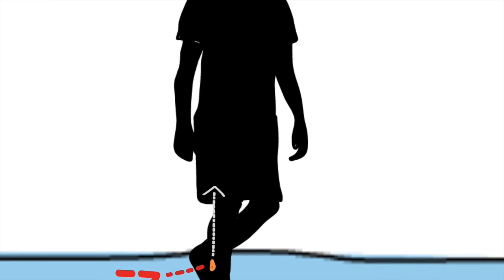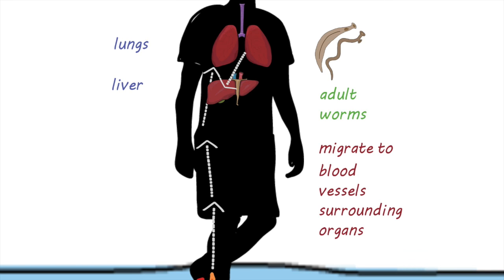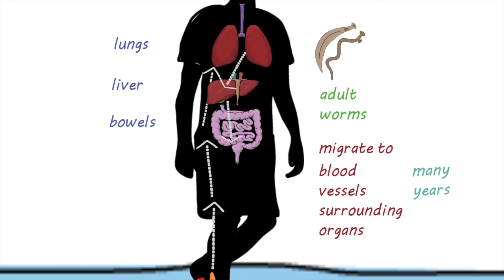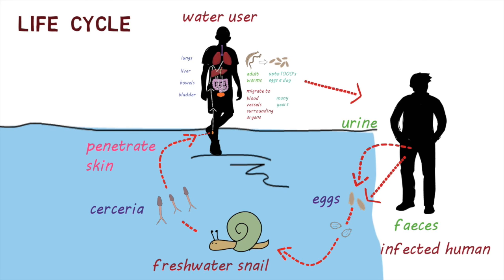Once in the body, the cercariae find their way through the lungs and into the liver, where they grow into adult worms. They then migrate into blood vessels surrounding specific organs, where they can live for many years. Some species of schistosoma prefer to live around the bowel, whereas other species prefer living around the bladder. These adults can lay thousands of eggs a day. Some eggs find their way back into the water through urine or feces, restarting the life cycle, but some eggs get trapped in the organs.